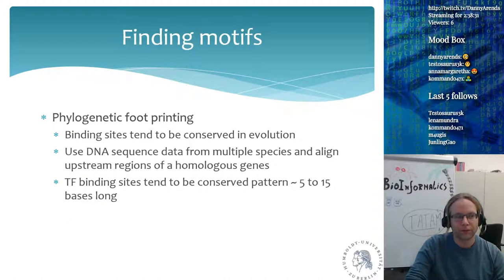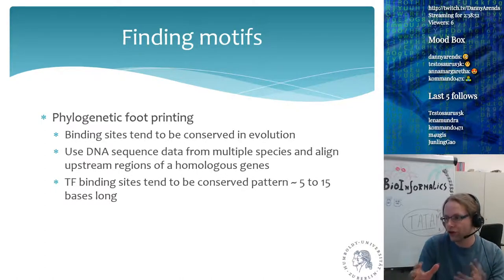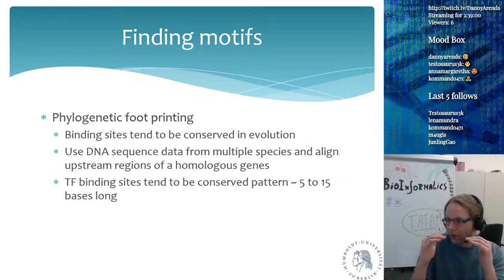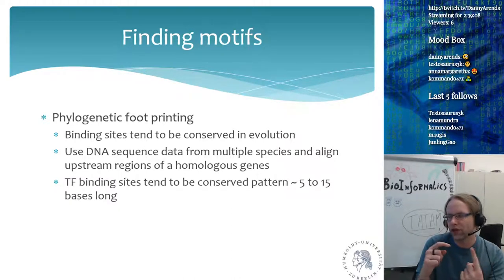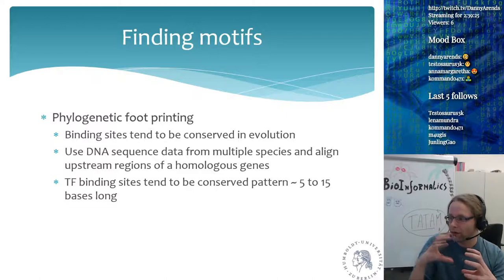Finding motifs is done by phylogenetic footprinting because binding sites tend to be conserved in evolution. You can take DNA sequences from multiple species, align them, and look for conserved patterns 5 to 15 bases long. For example, for myostatin you take the 5000 base pairs upstream in 10 to 20 different animals. A single turn of a DNA helix is about 4.6 base pairs, and most transcription factors bind in one to three helical turns.